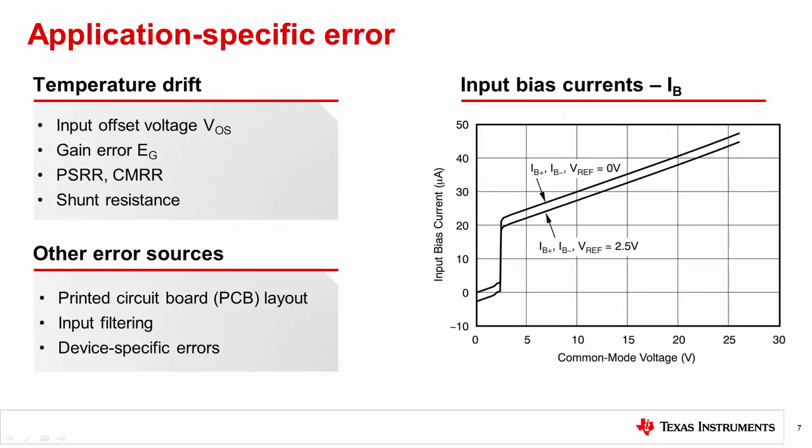Finally, let's consider some other types of error. Changes in temperature affect the performance of a current sense amplifier and all integrated circuits in general. Input offset voltage and gain error drift over temperature are usually specified in a product datasheet. PSRR and CMRR are not always given drift values, but minimum and maximum values are given both at room temperature and over the entire operating temperature range. Shunt resistor value changes are specified by the resistor manufacturer, often called the temperature coefficient or temp co of the resistor.